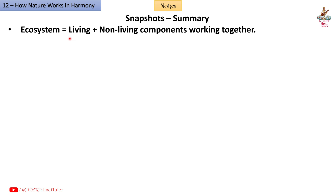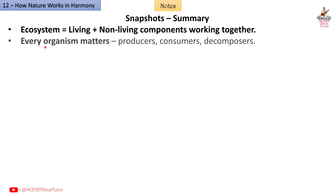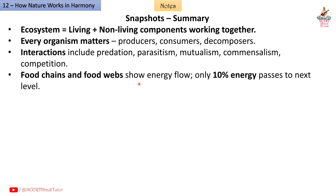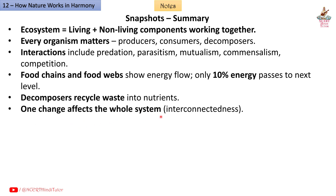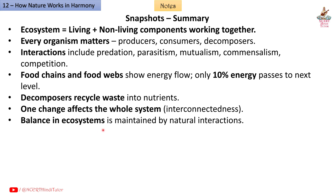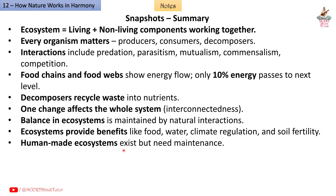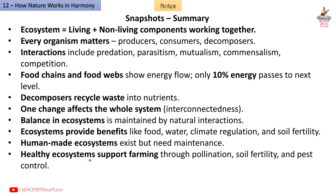Snapshot summary: An ecosystem equals living plus non-living components working together. Every organism matters — producers, consumers, decomposers. Interactions include predation, parasitism, mutualism, commensalism, and competition. Food chains and food webs show energy flow — only 10% of energy passes to the next level. Decomposers recycle waste into nutrients. One change affects the whole system. Balance is maintained by natural interactions. Ecosystems provide benefits like food, water, climate regulation, and soil fertility. Human-made ecosystems exist but need maintenance.